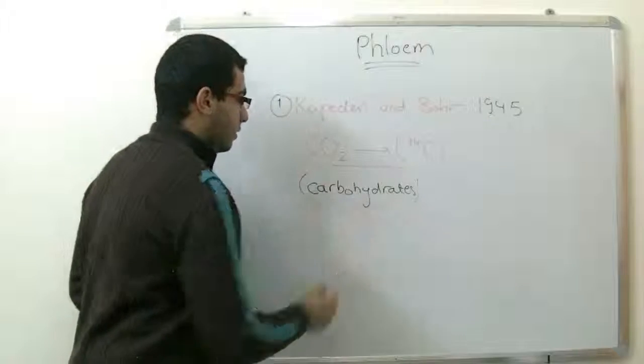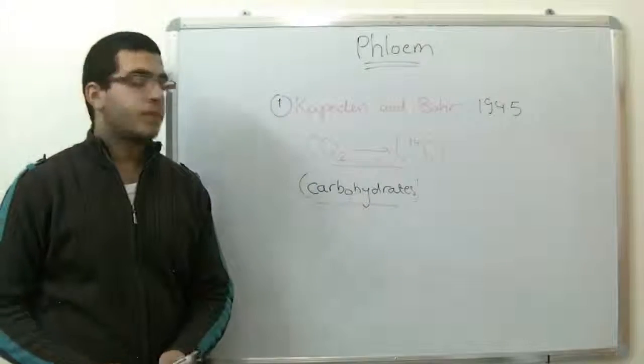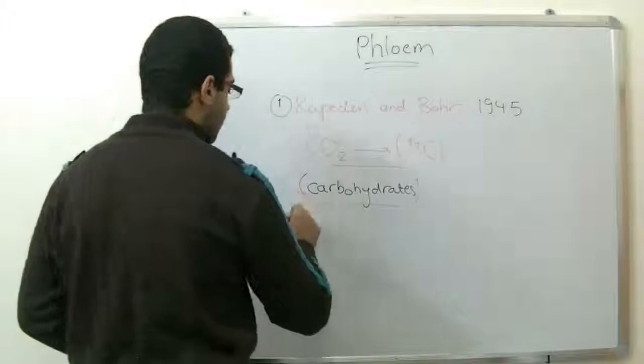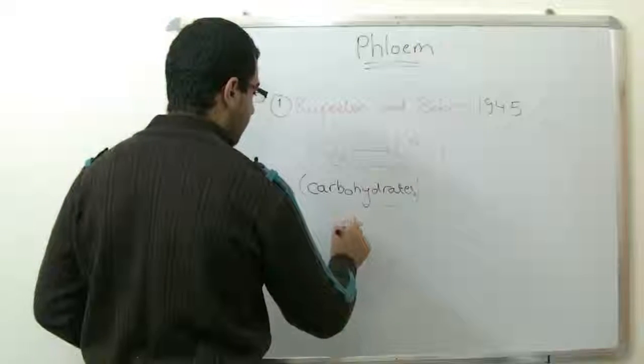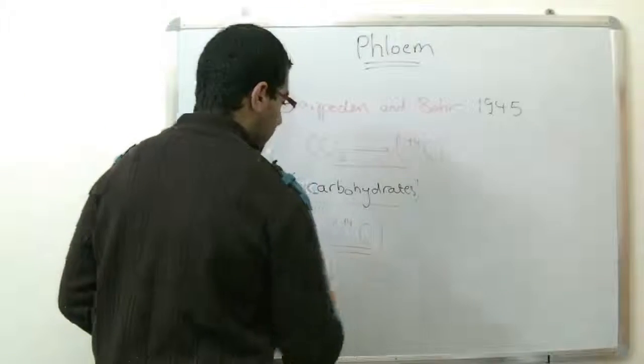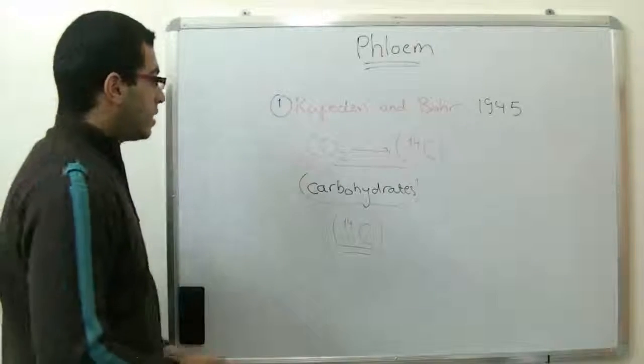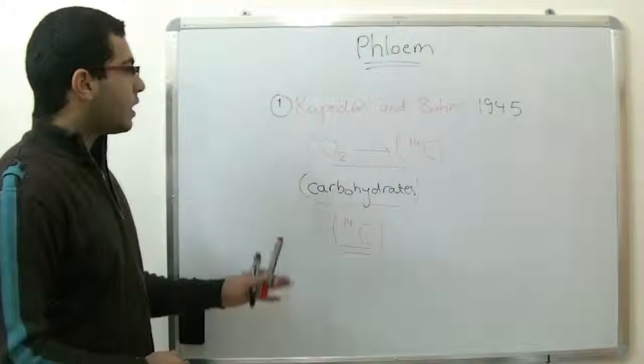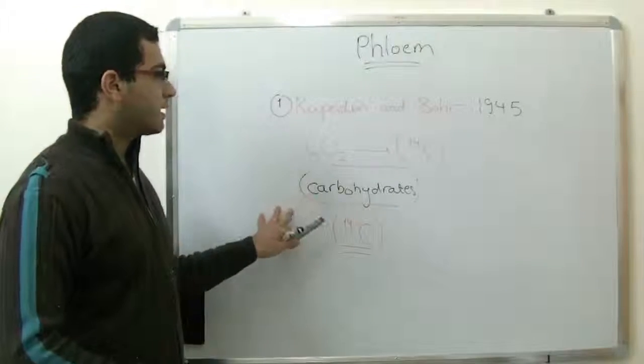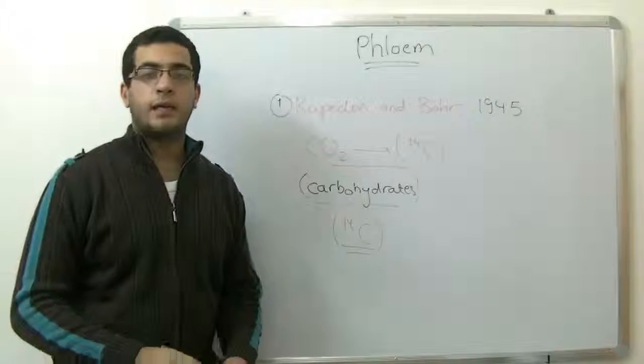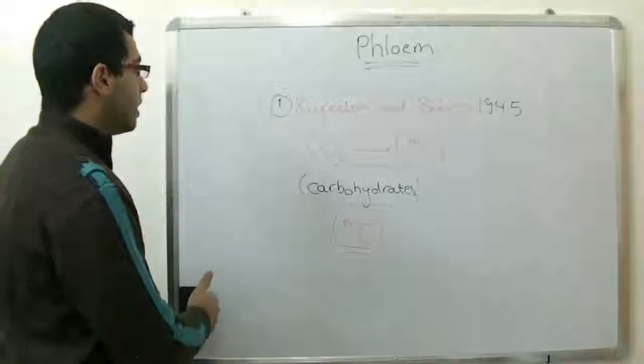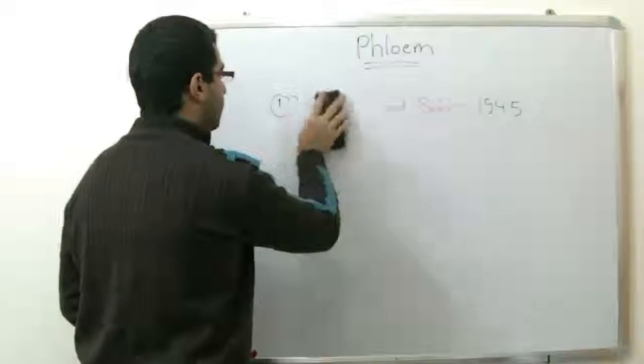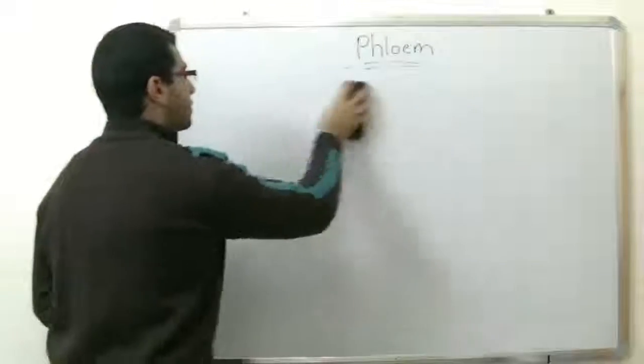And as the carbohydrates are considered organic substances, they will be translocated through the flowing tissues. And as those carbon dioxide also contain the radioactive isotope of carbon, they could be easily traced through the plant. So by tracing this radioactive isotope of carbon, they could know the pathway of the organic substances through the plant and they found that it's translocated through the flowing tissues by being translocated through the cytoplasm of the sieve tubes. This is our first point.